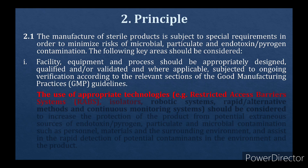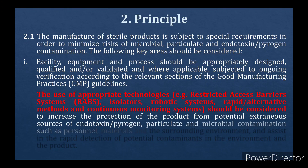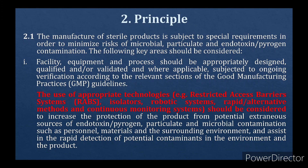The use of appropriate technologies — for example, Restricted Access Barrier Systems (RABS), isolators, robotic systems, rapid alternative methods, and continuous monitoring systems — should be considered to increase the protection against potential extraneous sources of endotoxin, pyrogen, particulate and microbial contamination such as personnel, materials and the surrounding environment.